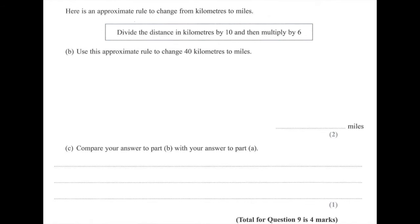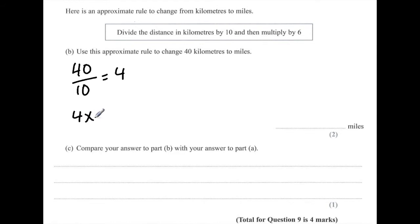Here is an approximate rule to change from kilometres to miles: divide the distance in kilometres by 10 and then multiply by 6. Question 9B: use this rule to change 40 kilometres to miles. First, 40 divided by 10 equals 4. Then 4 times 6 equals 24 miles. So the answer is 24 miles.